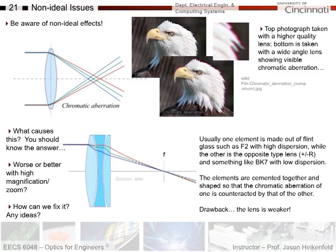Would this be better or worse for high magnification or zoom applications? It gets worse the more you zoom in — the shorter the focal length — because you have stronger refractive angles, and then the dispersion starts to become more and more significant.